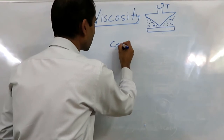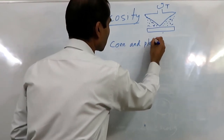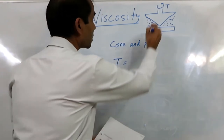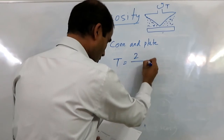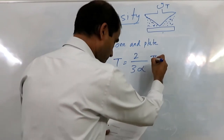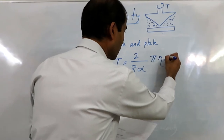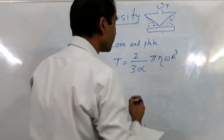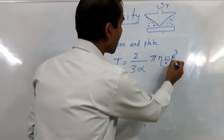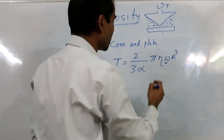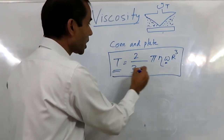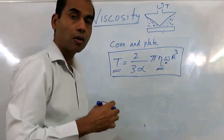This is called the cone and plate method, and by this method we can find the viscosity. Here, the torque measured is given as (2/3 alpha) multiplied by 5 eta omega r cubed, where alpha is the cone inclination angle, eta is the viscosity, omega is the angular speed, and r is the radius of the disc. By using this equation, we measure the torque, and since all other parameters are known, we can calculate eta, or the viscosity.